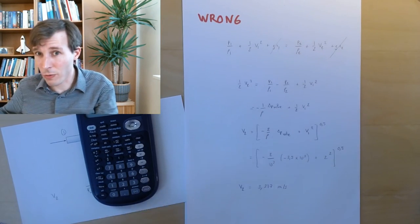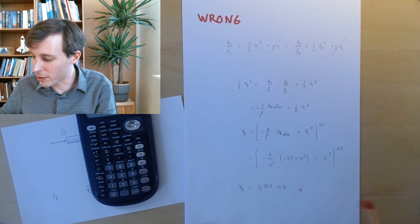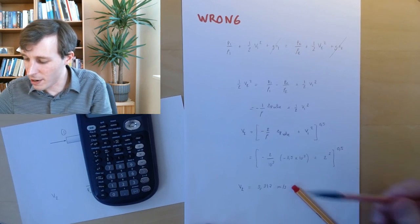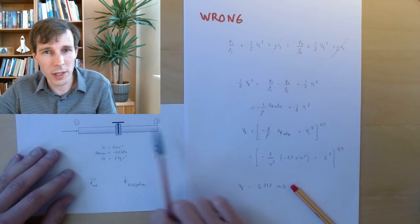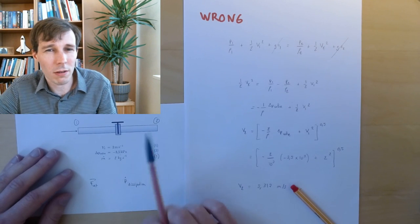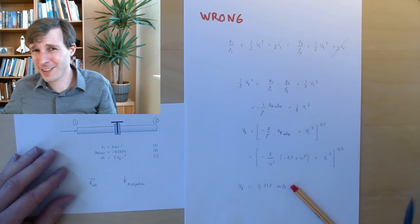What was I calculating? It was V2, so these are meters per second. Watch out, this is wrong. I don't want you to believe this is correct. But let's pretend it's correct for a moment. Oh yeah, velocity increase. Why did the velocity increase? Because of course the pressure decreases. Pressure decreases so the velocity's got to increase. No?